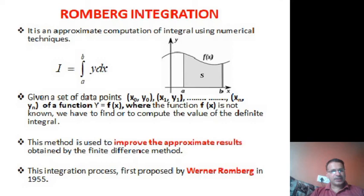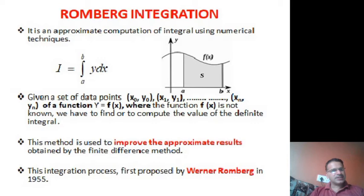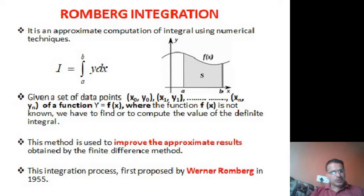In the trapezoidal rule, for a function f(x) from a to b, we write directly: I = h/2 * [f(a) + f(b)]. Point a gives (a, f(a)) and point b gives (b, f(b)). We join these two points with a straight line forming a trapezoid — where the two sides are parallel — hence the name trapezoidal rule. With this formula h/2 * [f(a) + f(b)], the accuracy is not very high.